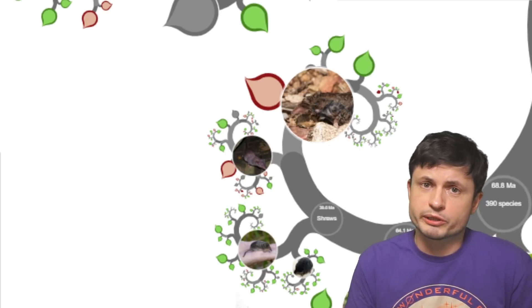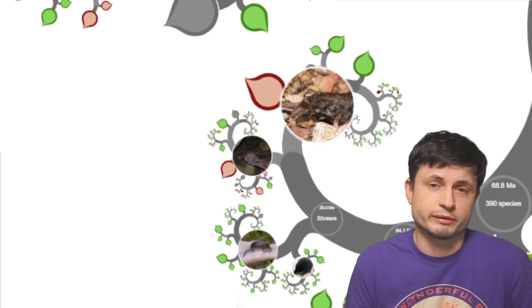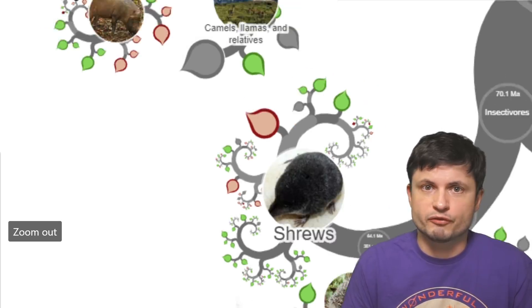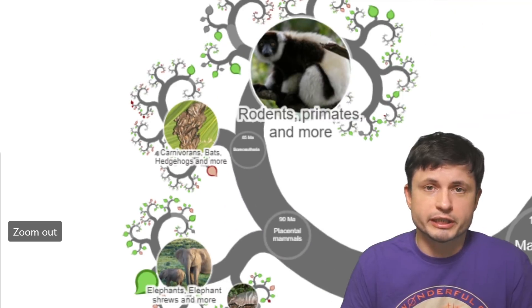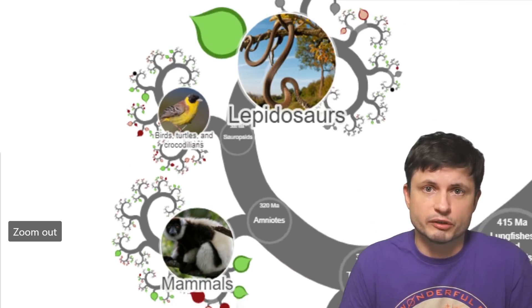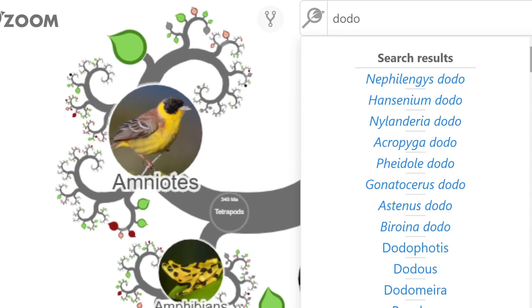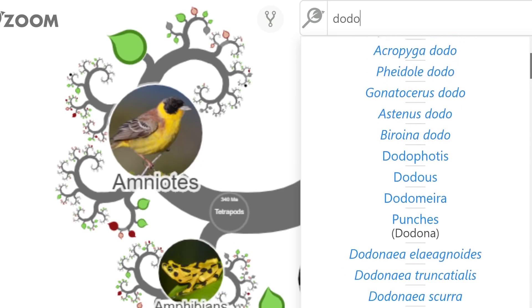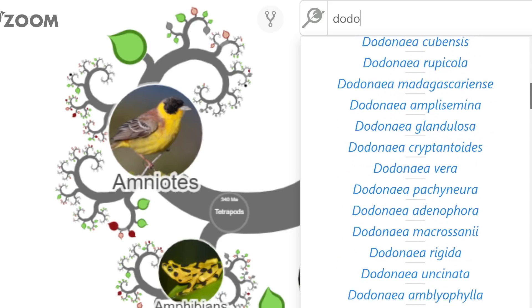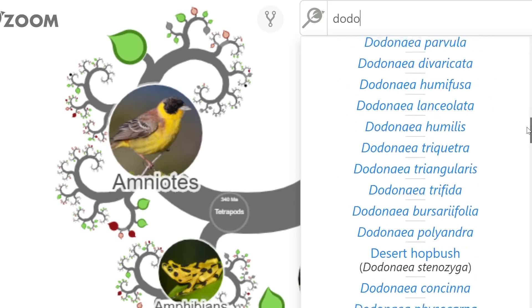But because this is still a work in progress, some things also don't really work as well as they could be working. I mean, for one, this is still a little bit sluggish, even on my relatively powerful computer. At the same time, the search itself could also use a little bit more refinement, mostly because the search currently doesn't seem to focus on the common name as much as the scientific name.